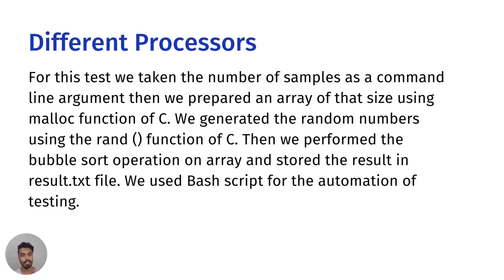We began the analysis by comparing the bubble sort algorithm across systems with various processors. We took the number of samples as a command line argument, then prepared an array of that size using the malloc function of C. We generated random numbers using the random function of C, then performed the bubble sort operation on the array and stored the result in a result.txt file. We used a bash script for automation of testing.